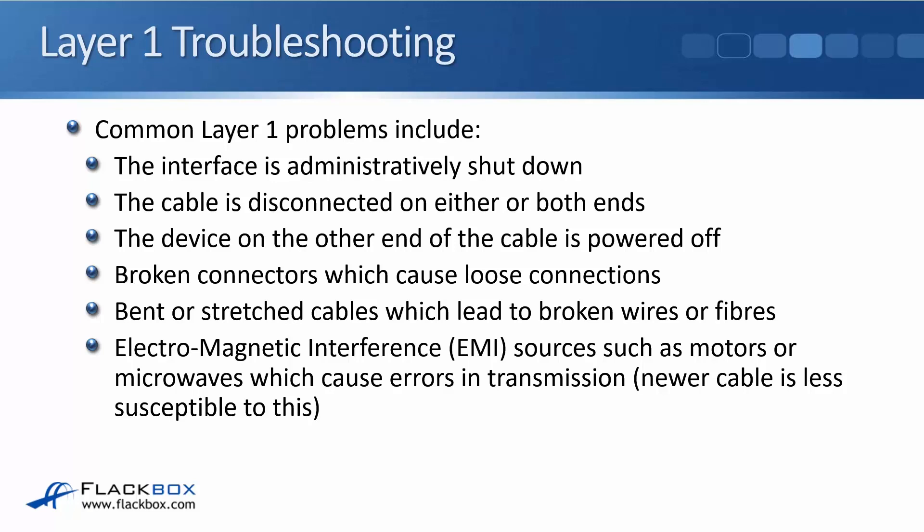If the cable is disconnected on one or both ends, you're not going to have any traffic going through there. Also, if the device on the other end of the cable is powered off, you're not going to have any traffic either. Broken connectors can cause loose connections — this happens quite commonly. On an Ethernet cable, the RJ45 connector clip can easily get broken off, causing a loose connection. Bent or stretched cables can break the internal wires or fibres. Also, EMI — electromagnetic interference — from sources such as motors or microwaves can cause errors in transmission.